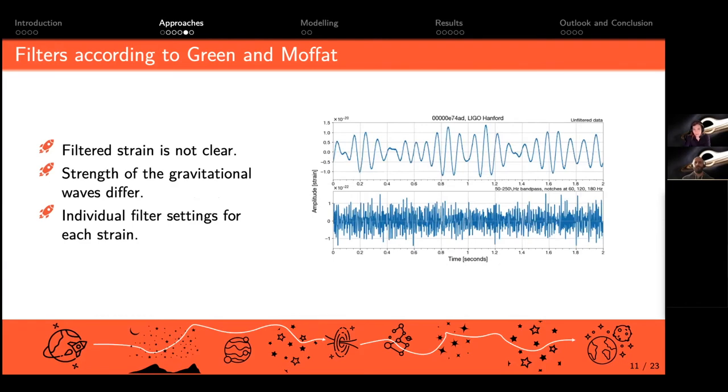Unfortunately the filtered strain is not really clear. Why is that? That's because the strengths of the gravitational waves differ from each other. Every black hole has a different mass, so you have different strengths in the waves. To make them visible we would need individual filter settings for each strain.